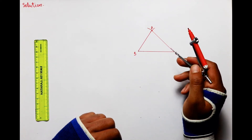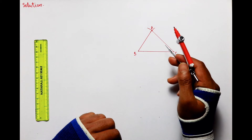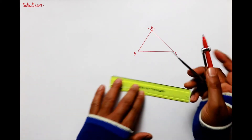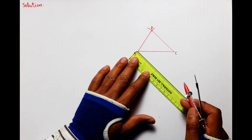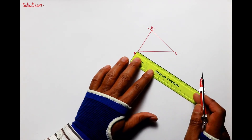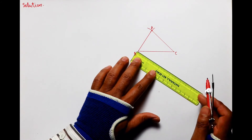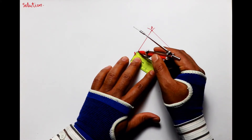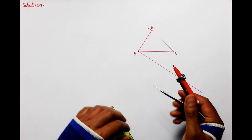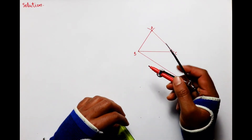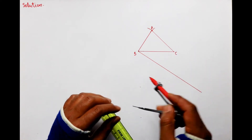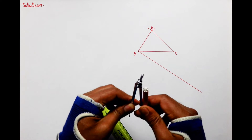अब 3/5 — इस given triangle का 3/5 part का एक दूसरा triangle हम बनाएंगे। उसके लिए सबसे पहले point B पर acute angle बनाती हुई एक ray draw कर लीजिए। क्योंकि 3/5 part करने हैं, और हम इसके 5 equal parts करेंगे।